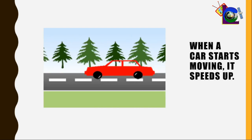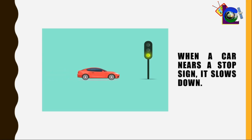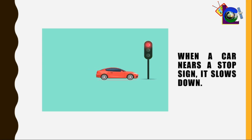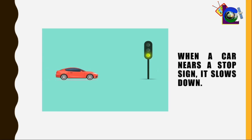Forces can produce changes in motion. When a car starts moving, it speeds up. When a car nears a stop sign, it slows down. The car is covering different displacements at equal time intervals; hence, it is not moving at constant velocity — this means the car is accelerating. Most of the motions we come across in daily life are caused primarily by force. To better understand the topic, perform the simple activities that follow.